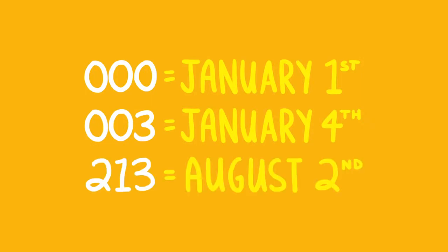So a number of 000 would mean January 1st, 003 would mean January 4th, and so on. All you really need to know is that the higher the number, the fresher the egg.